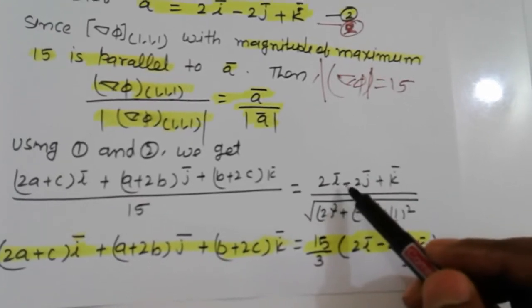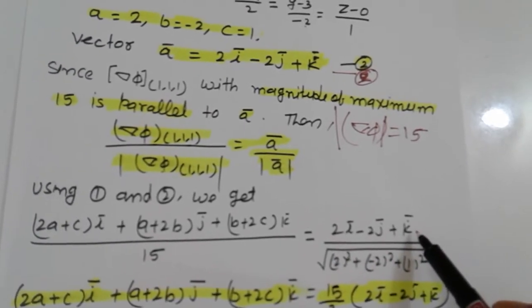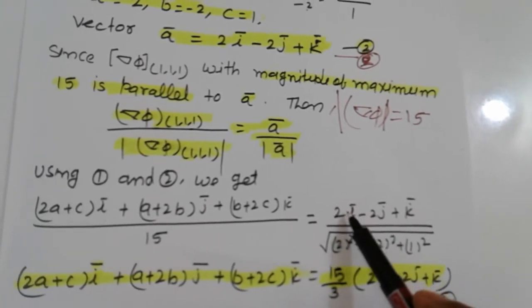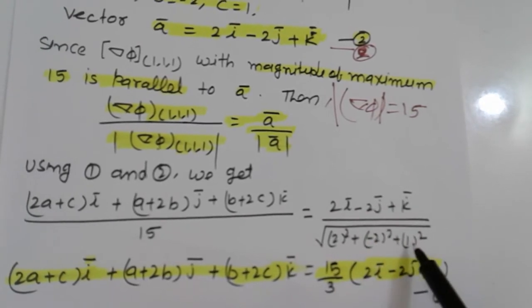(2a + c)i plus (a + 2b)j plus (b + 2c)k divided by 15 equals 2i minus 2j plus k.